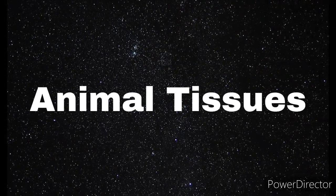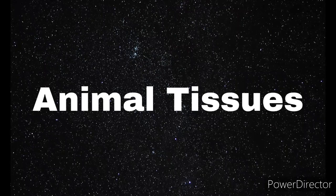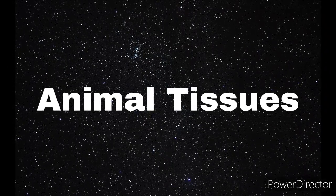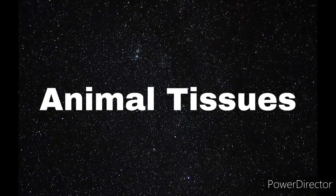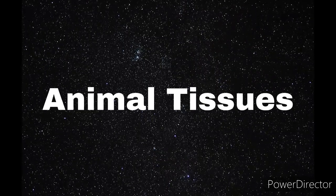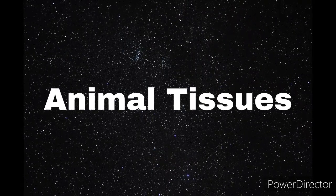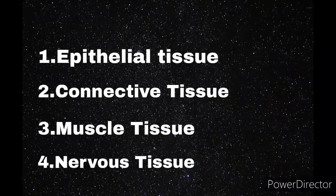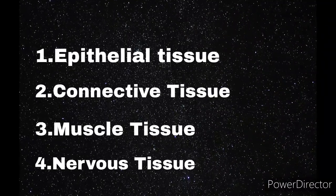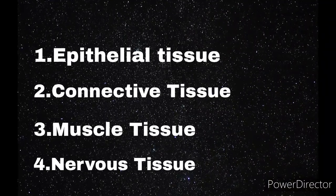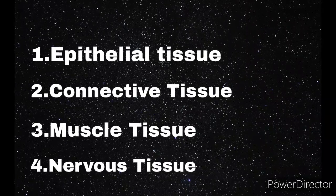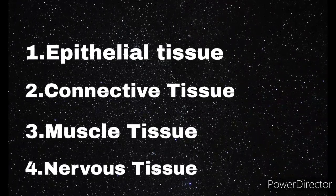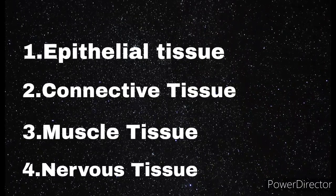All living organisms are made up of cells. A group of cells having similar structure and function is called tissue. This type of tissue in animals is mainly of 4 types: epithelial tissue, connective tissue, muscle tissue, and nervous tissue.